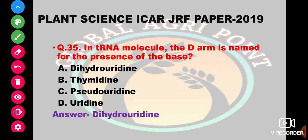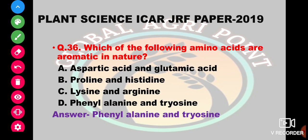In the tRNA molecule, the D-arm is named for the presence of which base? The options are dihydrouridine, thymidine, pseudouridine, or uridine. The answer is dihydrouridine. Which of the following amino acids are aromatic in nature? Aspartic acid, glutamic acid, proline, histidine, lysine and arginine, or phenylalanine and tyrosine. The answer is phenylalanine and tyrosine.